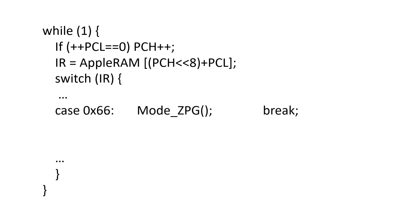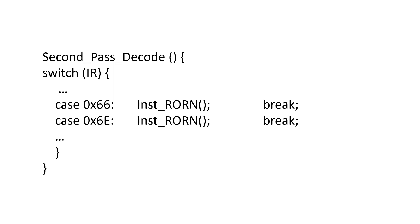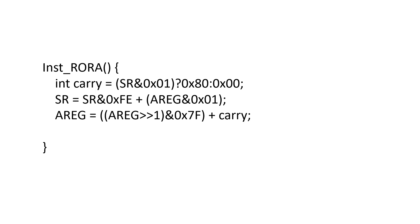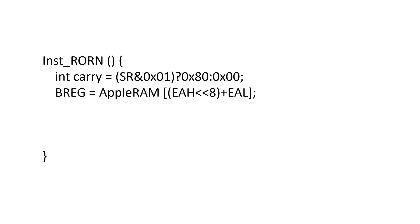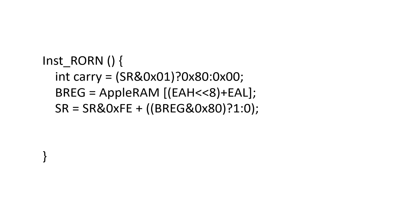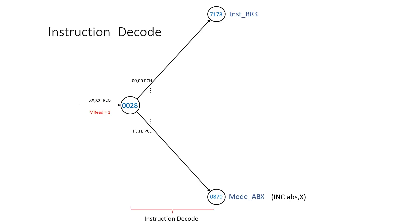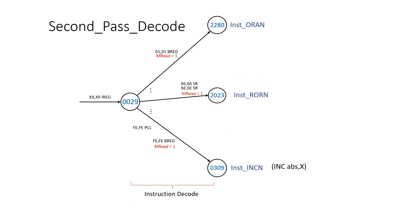We add them to our decode switch statement, with second pass decode for zero page and absolute. In the rotate right instruction, we first store carry, move bit 0 of the A register into carry, rotate A one position to the right, then load the previous carry into bit 7. As usual, negative and zero need to be updated. The generic form is basically the same, except we first load into the B register, operate on the B register, then write the value back to the same memory location, and update negative and zero again. Rotates are slightly more complex than shifts because we need to remember the carry up front.